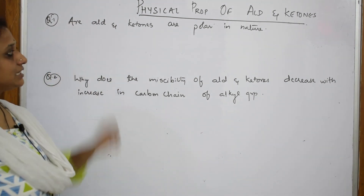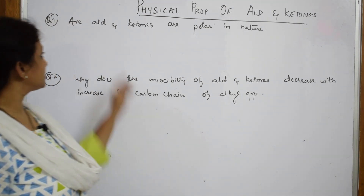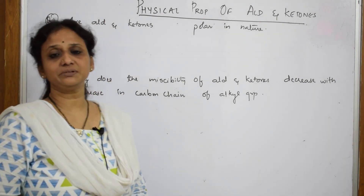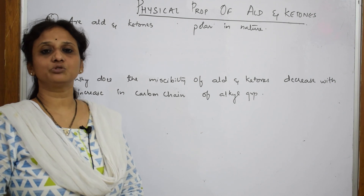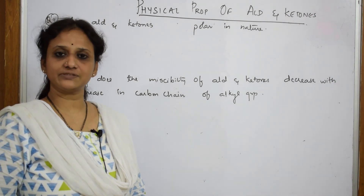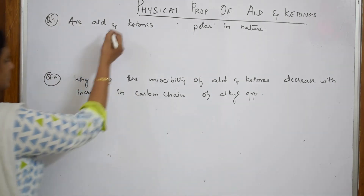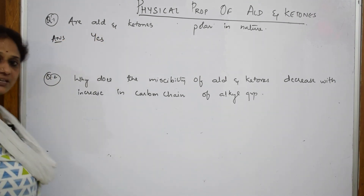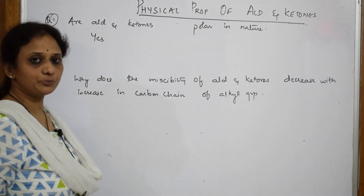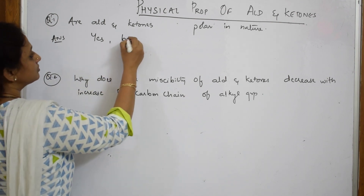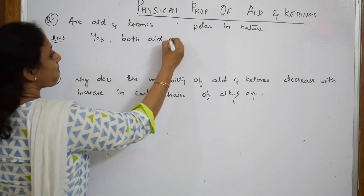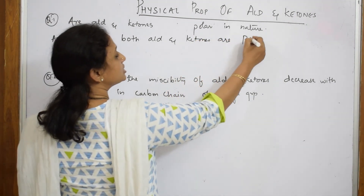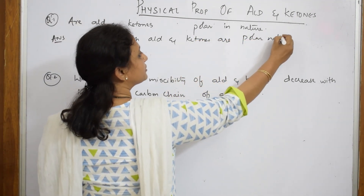Are aldehydes and ketones polar in nature? Yes. The meaning of polarity is the existence of both dipoles — the positive and the negative dipole. When this question is given to me, I am going to write: yes, both aldehydes and ketones are polar in nature. You have to justify your answer.